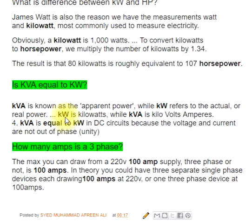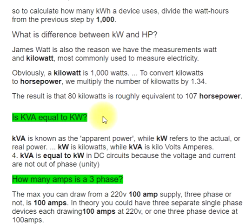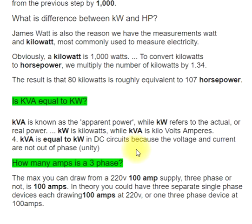Is kVA equal to kW? kVA is known as the apparent power, while kW refers to the actual or real power. kW is kilowatts, while kVA is kilovolt-amperes. kVA is equal to kW in DC circuits because the voltage and current are not out of phase (unity power factor).